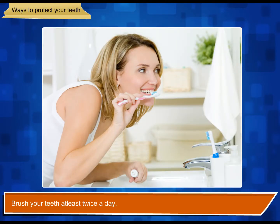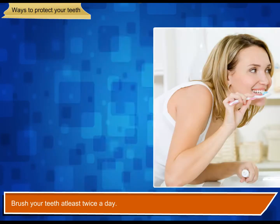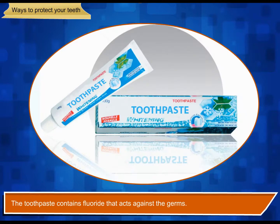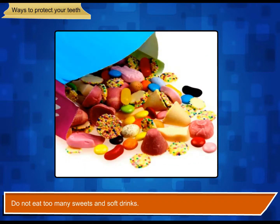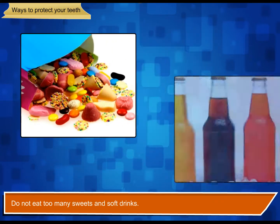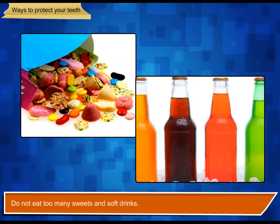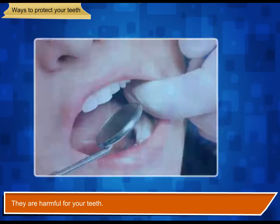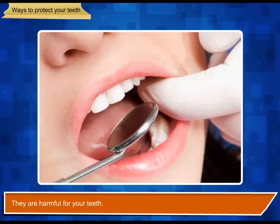Ways to protect your teeth. Brush your teeth at least twice a day. The toothpaste contains fluoride that acts against the germs. Do not eat too many sweets and soft drinks. They are harmful for your teeth.